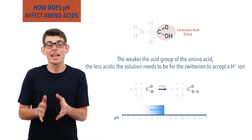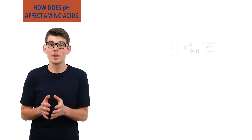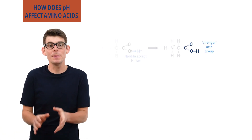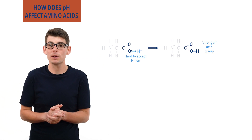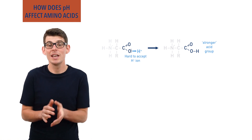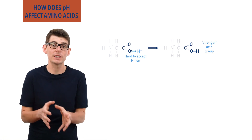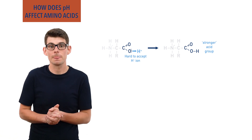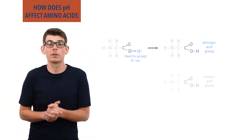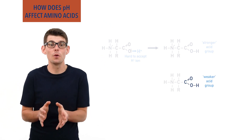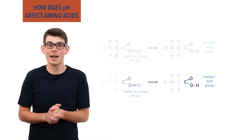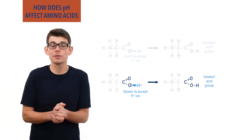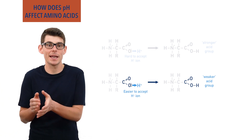This kind of makes sense. A stronger carboxylic acid group doesn't really want to take the H+ ion back, meaning a high concentration of H+ ions and low pH is needed to force it to take a H+ ion and reform the acid. Equally, a weaker carboxylic acid group can easily be forced to take a H+ ion back, meaning it can happen with a lower concentration of H+ ions and a slightly higher pH.